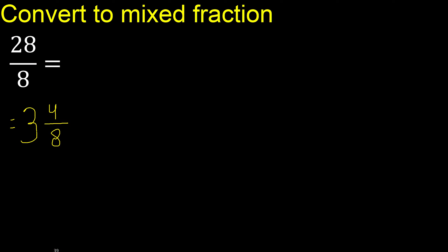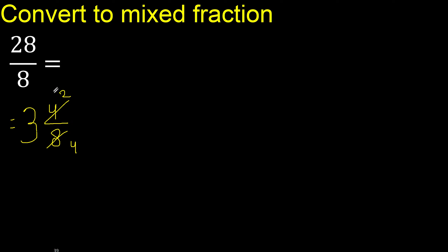This can be simplified because it can be divided by the same number. Divided by 2: 4 divided by 2 is 2, and 8 divided by 2 is 4. This can still be divided by 2: divided by 2 is 1, divided by 2 is 2.